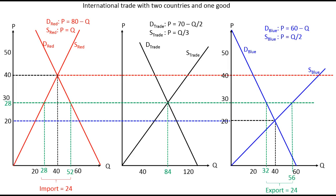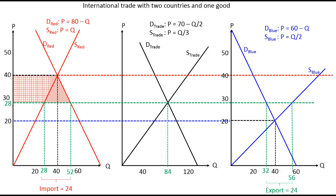Analyzing welfare, in red country the consumers now pay a lower price so consumer surplus increases by the red area — the price reduction from 40 to 28 gives them a gain based on the quantity consumed initially, plus additional gain from increased consumption. However, there is also a loss in red country: producer surplus falls because suppliers now produce a smaller quantity at a lower price, represented by the red squared area.